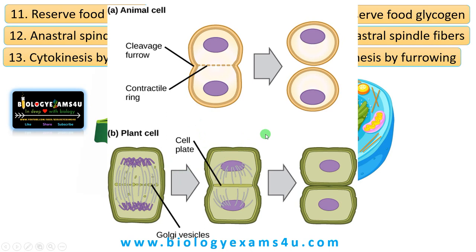Difference number 14: plant cells can synthesize amino acids, vitamins, etc., whereas animal cells cannot synthesize all amino acids and vitamins.